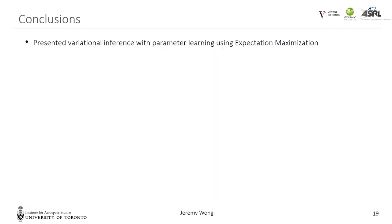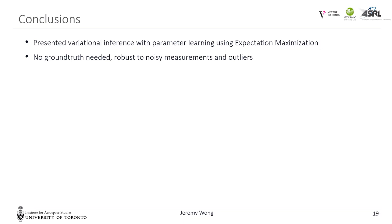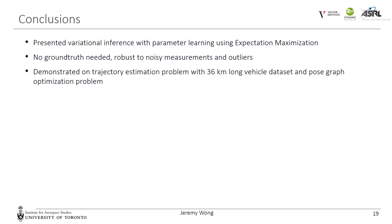In conclusion, we have presented variational inference with parameter learning using expectation maximization. We showed that this parameter learning method does not need ground truth and is robust to noisy measurements and outliers. This is desirable because in many cases we do not have a way of obtaining accurate ground truth of robot trajectories. The implication is that we now have a framework for estimating robot parameters based solely on whatever sensors are available. We have experimentally demonstrated our method on a 36-kilometer long vehicle dataset and a pose graph optimization problem with false loop closures.